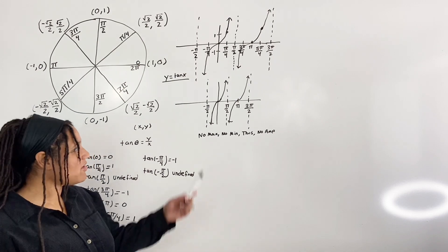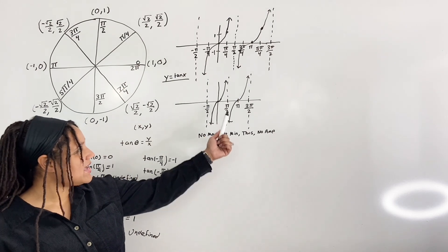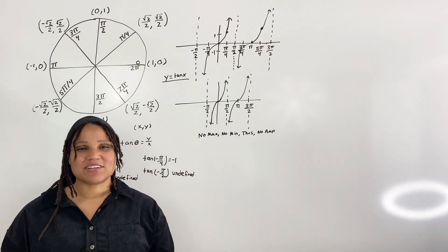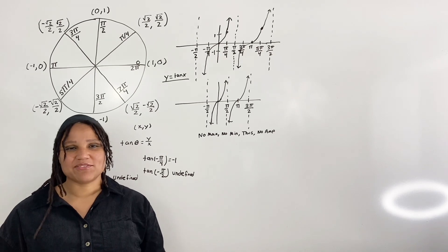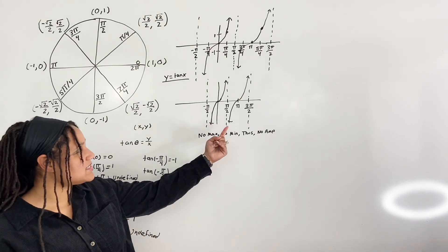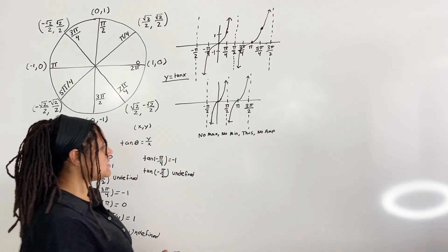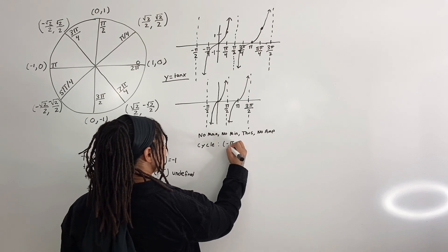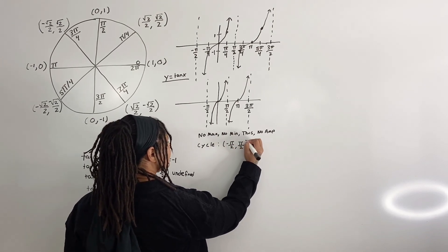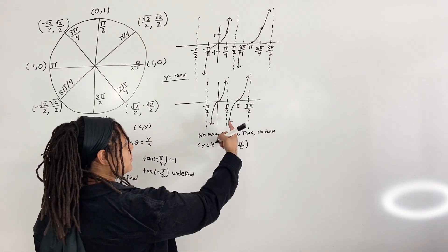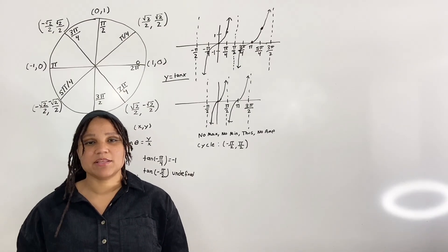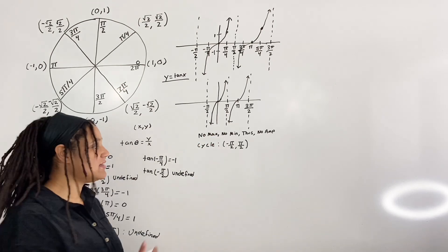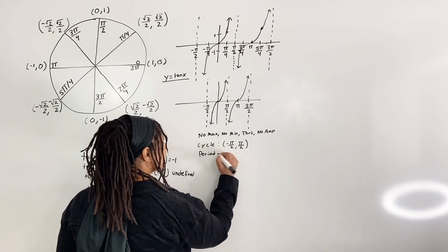Also, observe that the graph alternates between asymptotes and intercepts. Next, let us discuss the cycle. The cycle is one complete period — after the graph completes one cycle, it repeats itself forever to the right and to the left. From one asymptote to the next, you have one cycle. So we say that the cycle is from negative pi over 2 to pi over 2, not actually including either endpoint. The period is the length of one cycle. From negative pi over 2 to pi over 2, it's a length of pi, so the period is equal to pi.